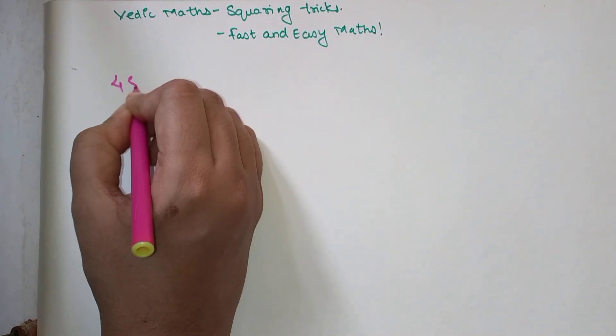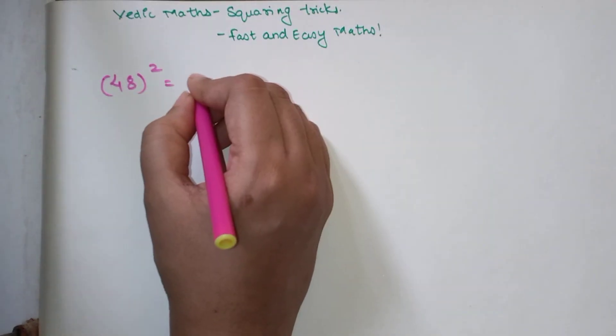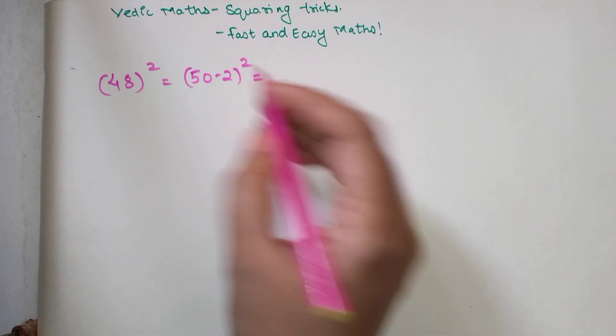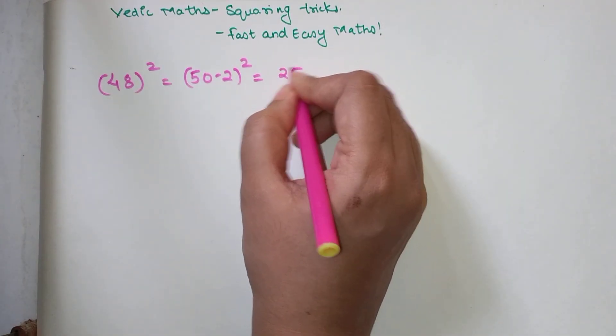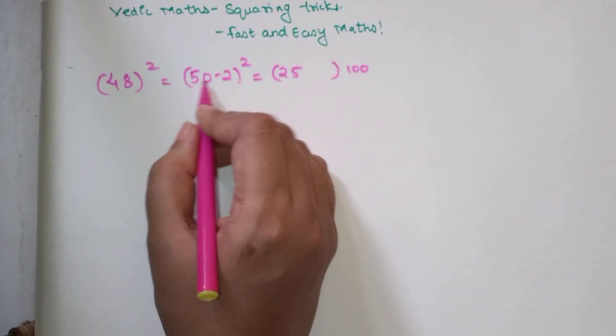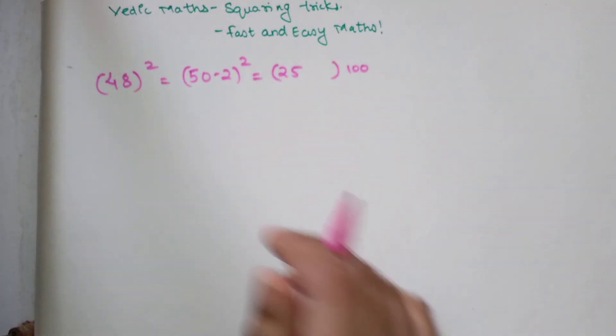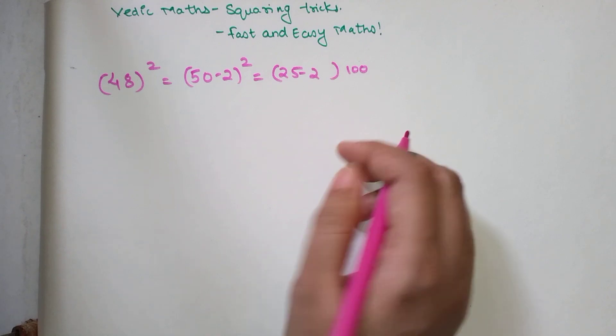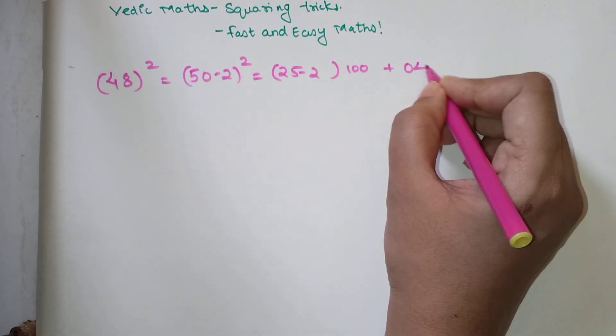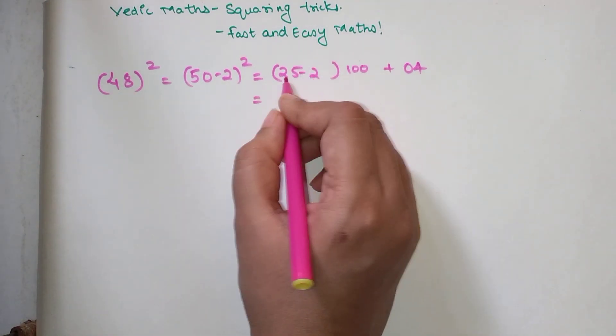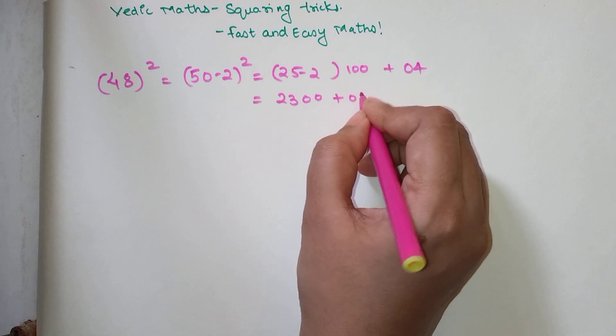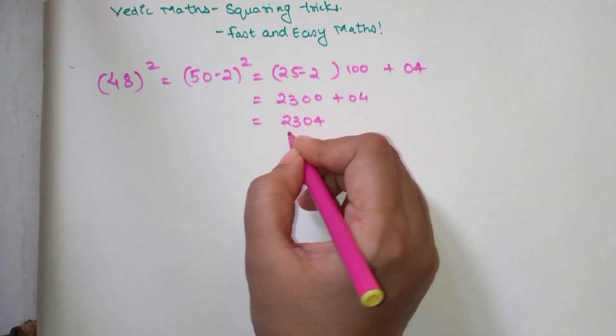So now what is 48 square? We can write 48 as nothing but 50 minus 2, the whole square. And what is 50 square? That is nothing but 2500. So we are going to write 25 and we are going to write 100 here. Now how many numbers less than 50 is 48? That is 2. So here also I am going to subtract by 2. And what is my last digit square? That is 2 square is nothing but 04. We are going to write it in two digit form. So here, can you tell me what is 25 minus 2? That is 23 into 100, that is 2300 plus 04. So my answer is 2304.